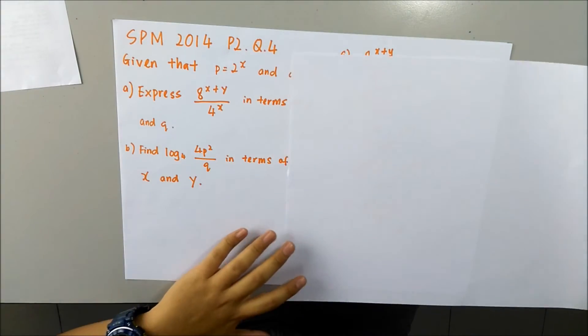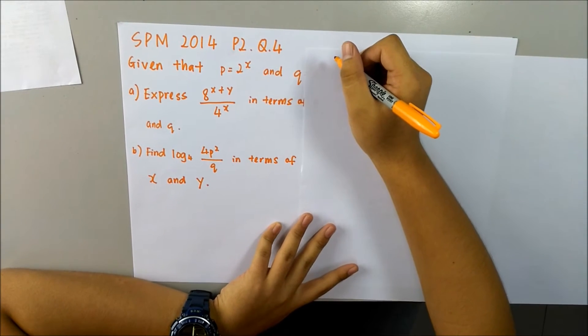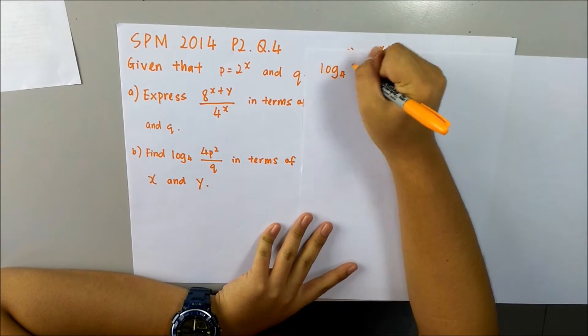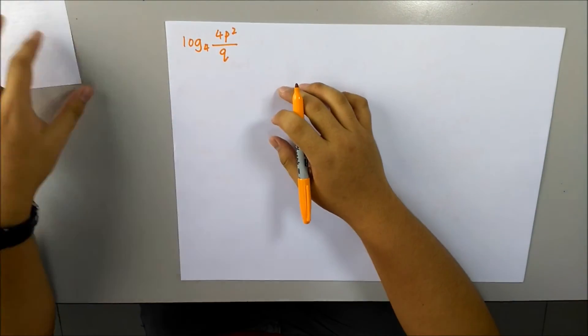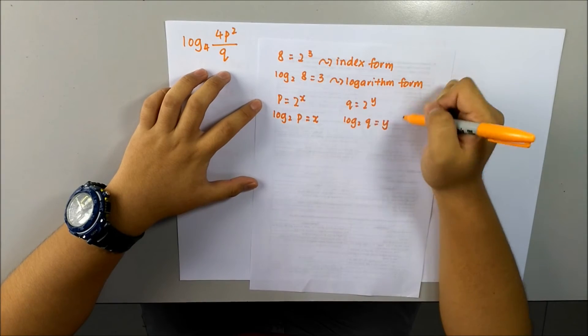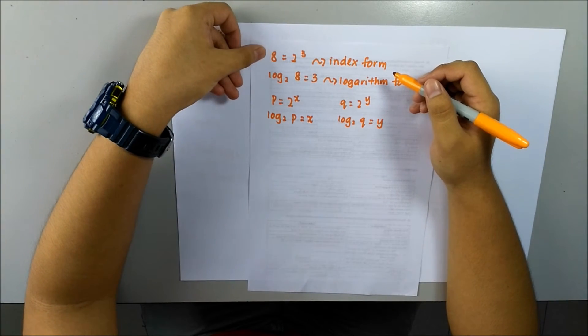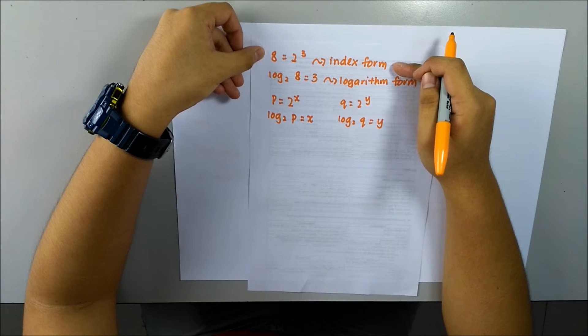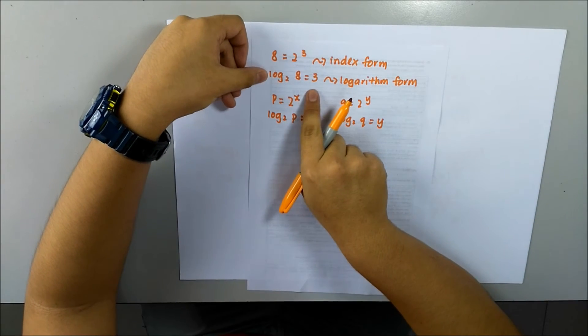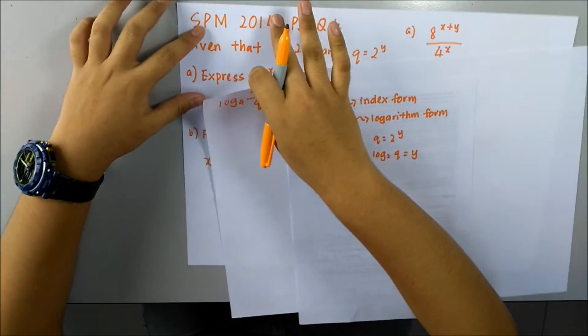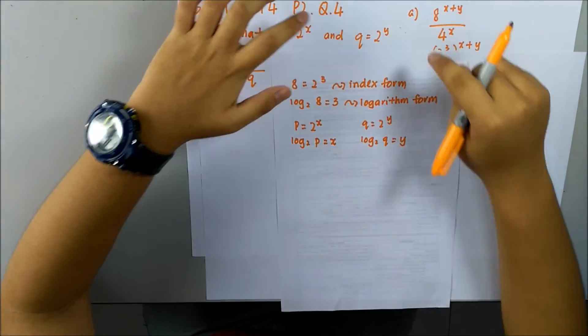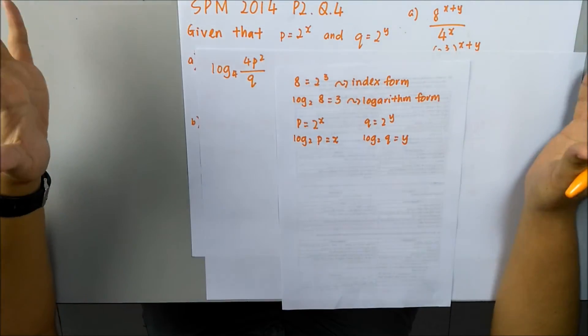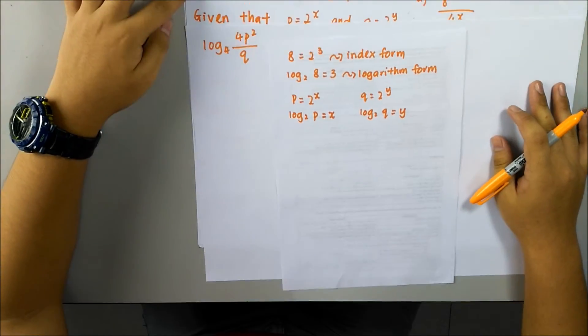And for question part b, you are asked to solve log base 4 of p squared over q. In this question, we need to use this: 8 is equal to 2 cubed. It is in index form. To change it to logarithm form, we need to write it like that. So we got to change this in logarithm form in order to see the question and to sub it in.